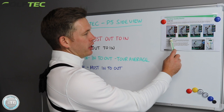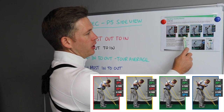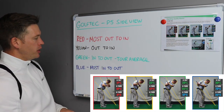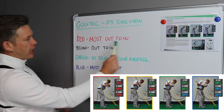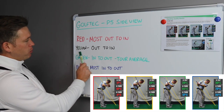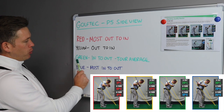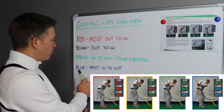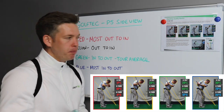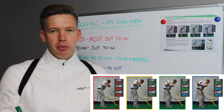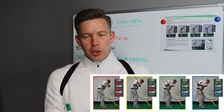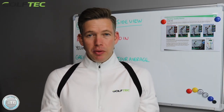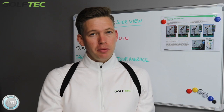We go from a red color to yellow to green to blue. The red would be the most out to in, a yellow number would be slightly out to in, a green number would be into out which is basically where the tour average is, and then blue would be the most into out. When we're coaching here at Golf Tech we're trying to push people more towards these green numbers where the tour players are, and try to help them improve their golf using the motion measurement.